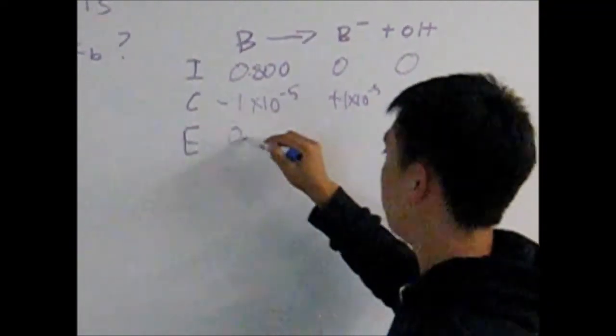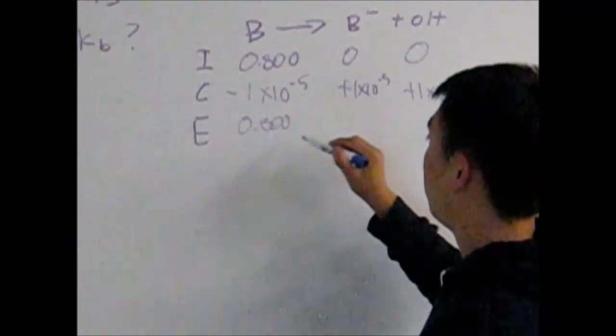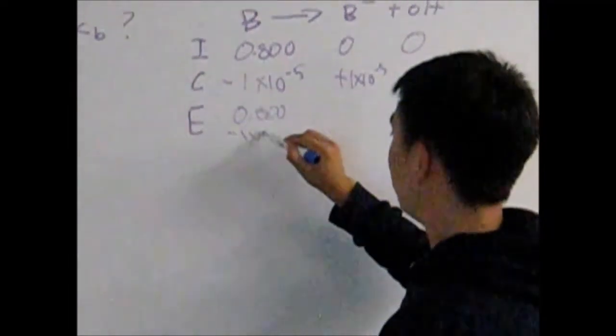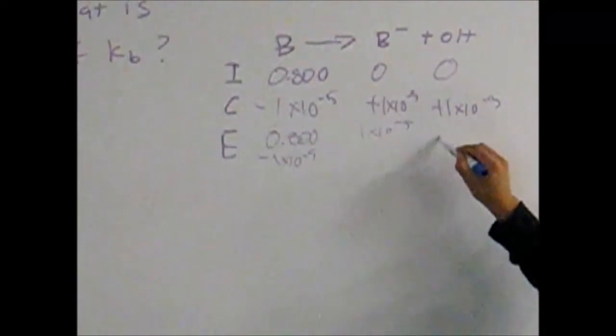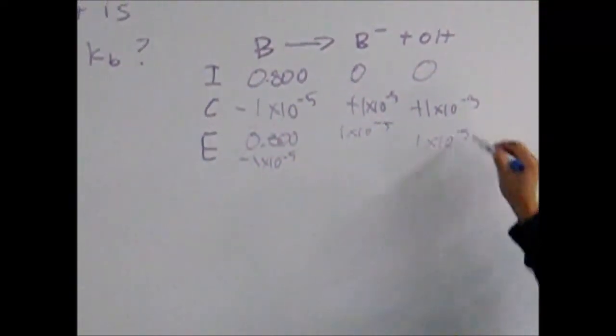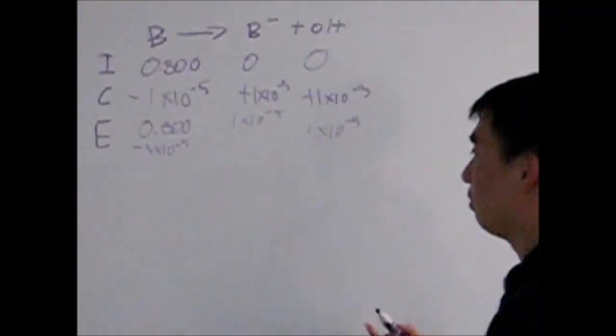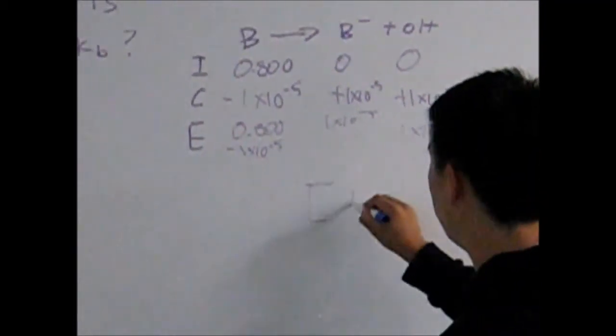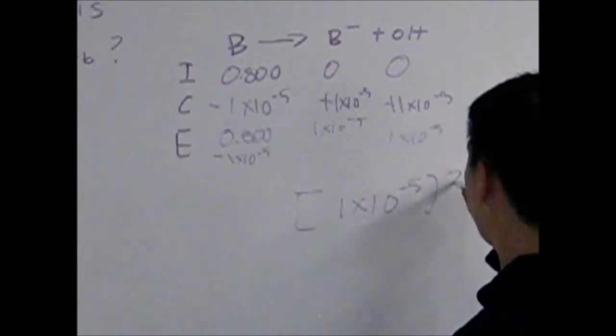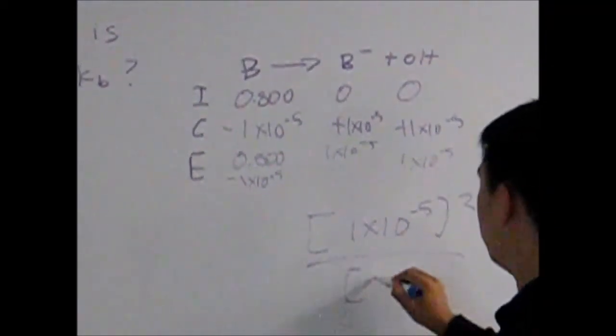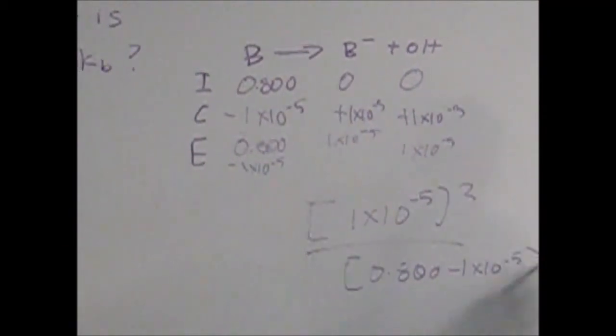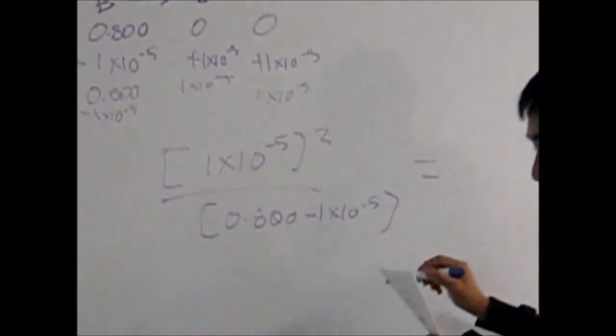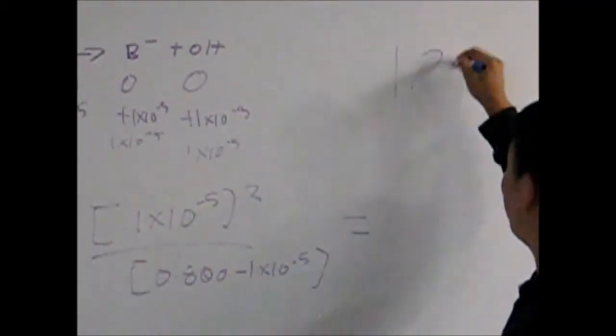Then we solve for the equilibrium, which is 0.8 minus 1 times 10 to the negative 5. BH+ would be 1 times 10 to the negative 5, and OH would be 1 times 10 to the negative 5. Now that we have our equilibrium numbers, we can find the equilibrium constant: kb equals (1 times 10 negative 5) squared over (0.8 minus 1 times 10 negative 5). This is based on the relationship products over reactants. After that, we get our answer: 1.25 times 10 to the negative 9.